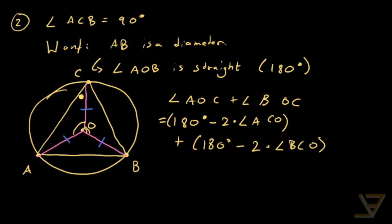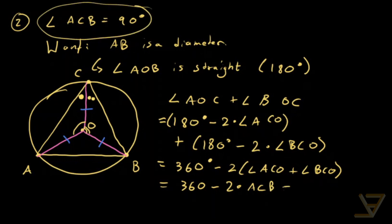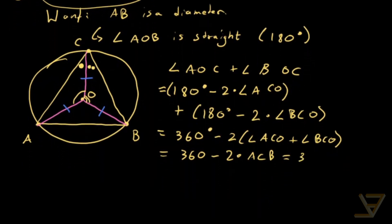So that's equal to 360 degrees minus 2 times angle ACO plus angle BCO. And ACO plus BCO is equal to ACB, the angle that we have up here in our assumption. And that's equal to 360 degrees minus 2 times 90 degrees, and that's just equal to 180 degrees.